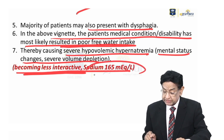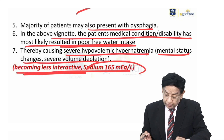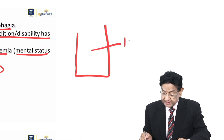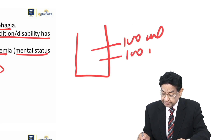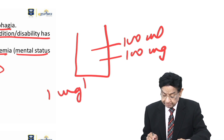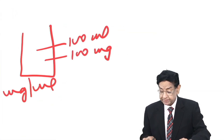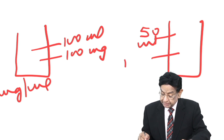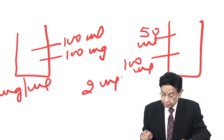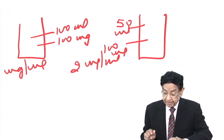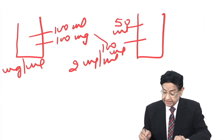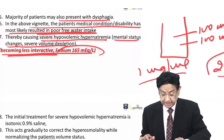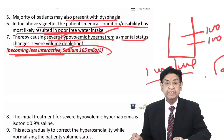The patient became less interactive; sodium is 165. Let me give you a day-to-day example. I have a glass with 100 ml of water and 100 mg of sodium — concentration is 1 mg per ml. Now I boil the water; 50 ml evaporates. The glass has 50 ml water but sodium is still 100 mg, so concentration goes to 2 mg per ml. There is loss of water which is causing hypernatremia. So it is hypovolemic hypernatremia which is causing altered sensorium.